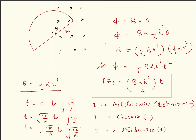Let me analyze this situation. Since angular acceleration is alpha and initial omega is 0, theta equals omega_0 t plus half alpha t squared, where omega_0 is 0, so theta equals half alpha t squared. This gives flux as a function of time, which is proportional to t squared. Since flux is proportional to t squared, EMF equals dΦ/dt, which gives EMF equal to B alpha R squared divided by 2, multiplied by t. So EMF is proportional to t.